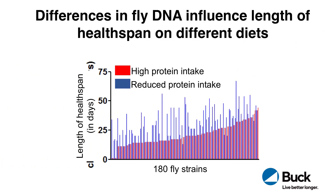Here's some data from my work in which I looked at about 180 different strains of flies, all with different genetic backgrounds. I exposed them to two different diets — one high-protein and one lower-protein — and I measured how long these flies were active, which is how I determined the health span of the fly.